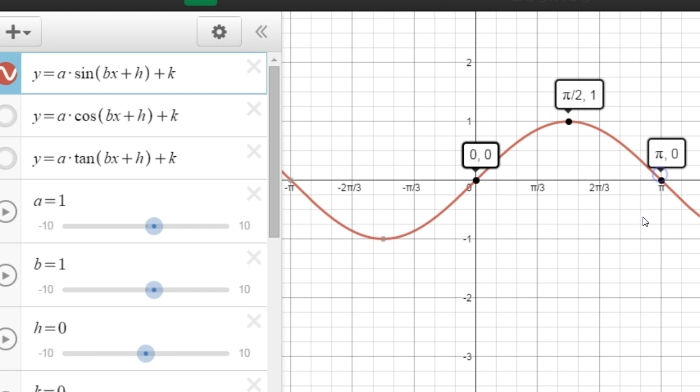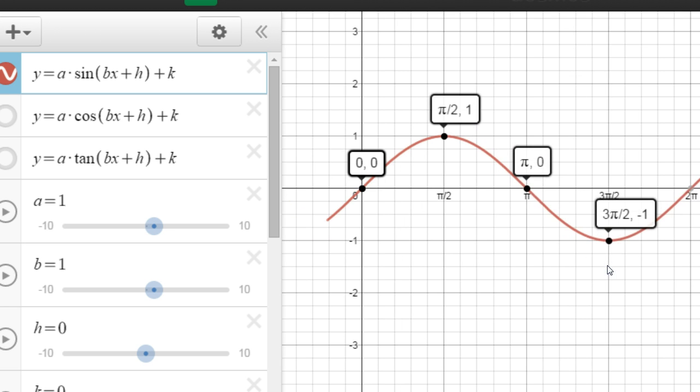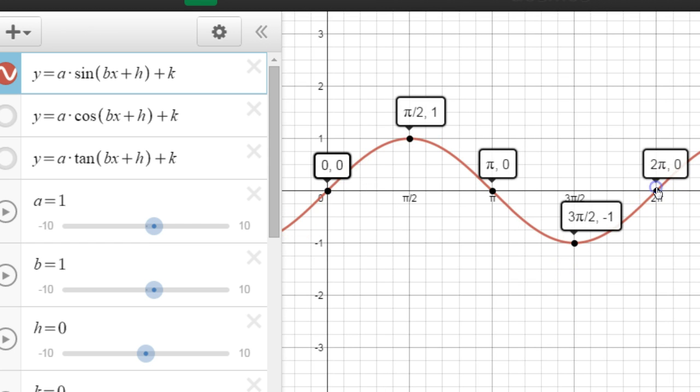And then it goes down to zero at pi, and then it goes down to negative one at three pi halves. Let me zoom out a little bit, and then at two pi it goes back to zero and it starts over again, so the cycle is going to go through entirely like this.